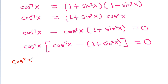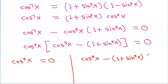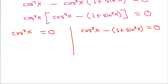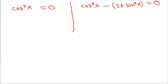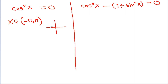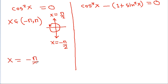So either cos²x = 0 or cos⁵x − (1 + sin²x) = 0. In the interval minus pi to pi, cos²x = 0 at x = −π/2 and at x = π/2. So from this case we get x = −π/2 and x = π/2.